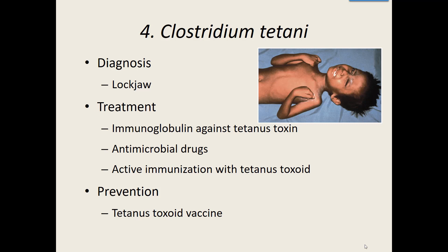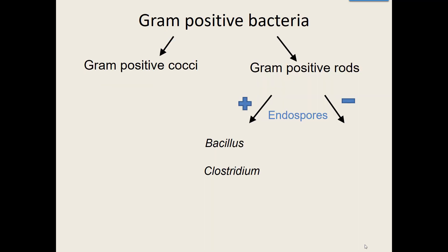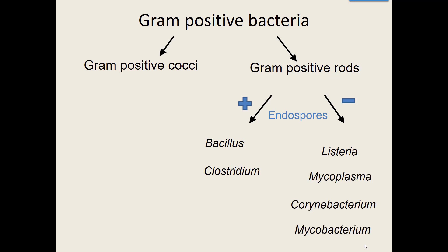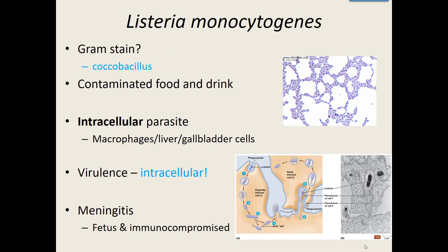Our last group is gram-positive bacilli or rods that don't make endospores — four genus to talk about. The first is Listeria. When we gram stain them, they're a coccobacilli shape — super short, almost cocci-shaped, almost round but not quite. We generally pick it up by eating or drinking contaminated foods or beverages. This bacteria will actually grow just fine in a cold environment — most bacteria are inhibited by refrigeration, but this bacteria will still continue to grow. When you ingest it, it actually causes cells of the body — macrophages, liver cells, gallbladder cells — to ingest it.